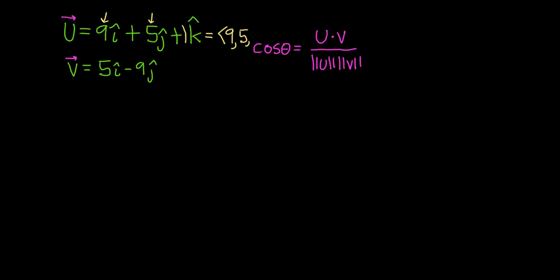And then there's really an invisible 1 in front of the k-hat. Here, you can think of this as plus 0 k-hat. Okay, so this is 5, negative 9, and 0.